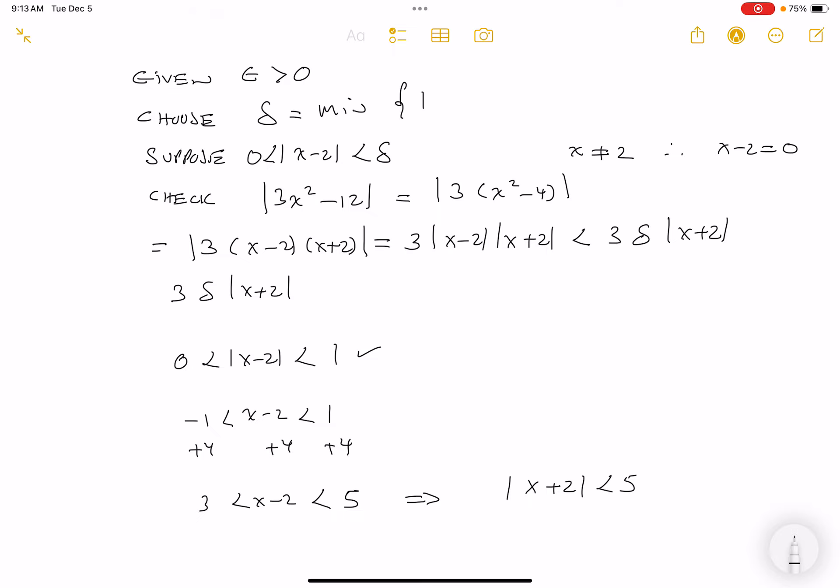And again, we just went through this. We took a minimum of this. We don't know what the delta is yet, by the way. But say if it's 1, I have this over here. And let's write this down. So I have this part over here. That's going to be less than 5. All right? So put this over here. Less than 3 delta 5. So let's see what that gives me. That gives me 15 delta.